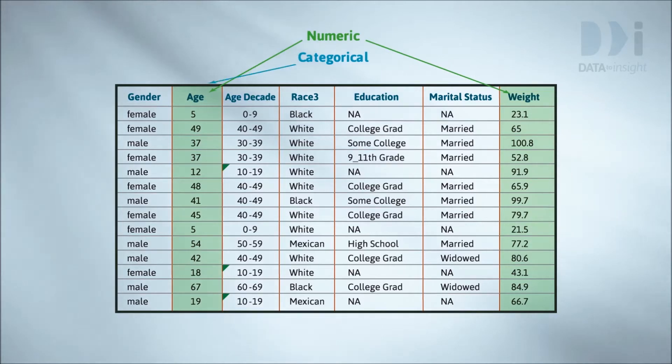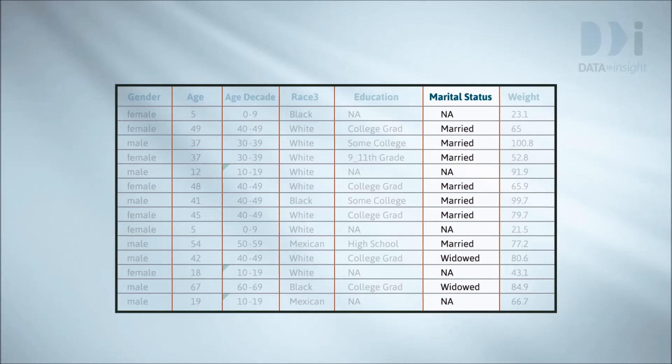Categorical variables like gender, age decade, race 3, education and marital status give us group membership labels. A categorical variable like marital status divides our people up into categories or groups.